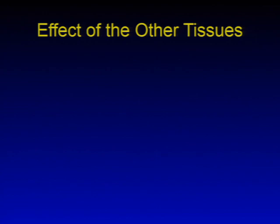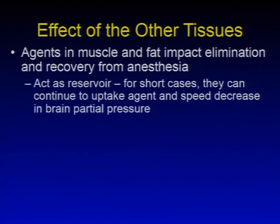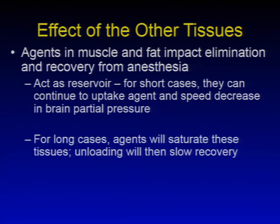The other tissues of the body also affect how agents come on and go away. Elimination and recovery are affected by the amount of agent in muscle and fat. For very short cases, muscle and fat stores act as a reservoir — they continue to take agents from the blood and speed the decrease in the agent's partial pressure within the brain, speeding recovery. But for a long case, agents will saturate the muscle and fat tissues, and those compartments will need to unload before the brain partial pressure drops low enough for the patient to wake up, slowing recovery.